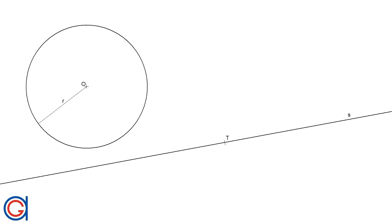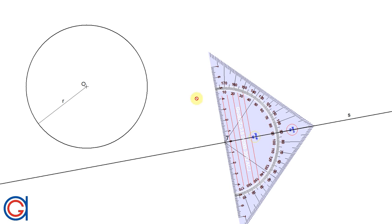The first step: we are going to draw a perpendicular line from tangent point T on the straight line, as can be seen here using a 90-degree set square.